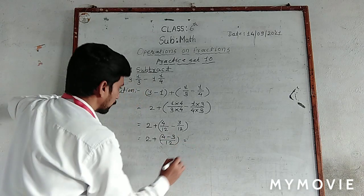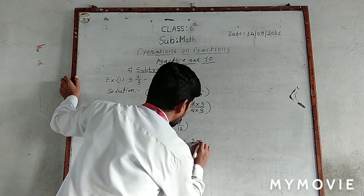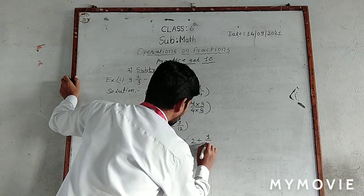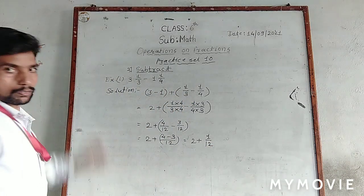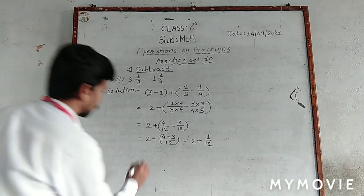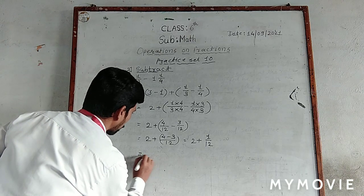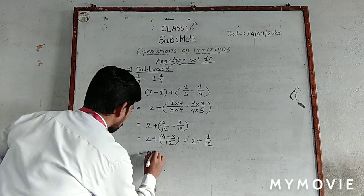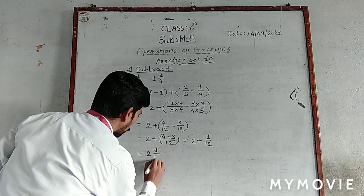This equals two plus one upon twelve. The final answer is two and one upon twelve.